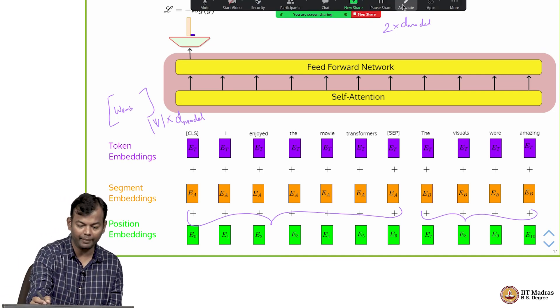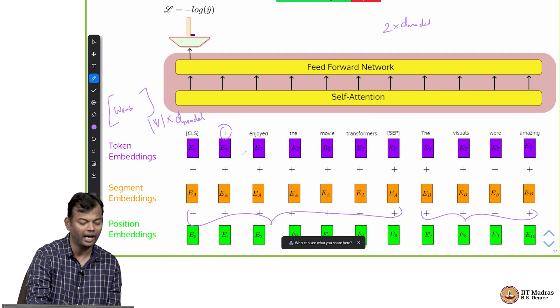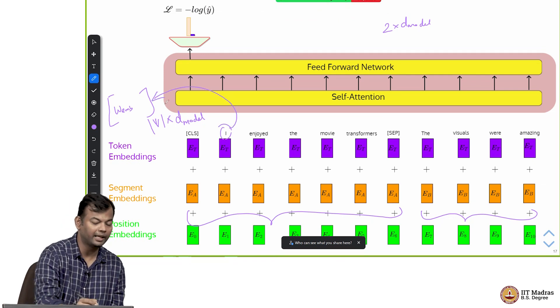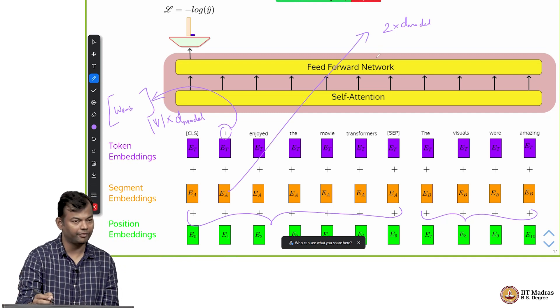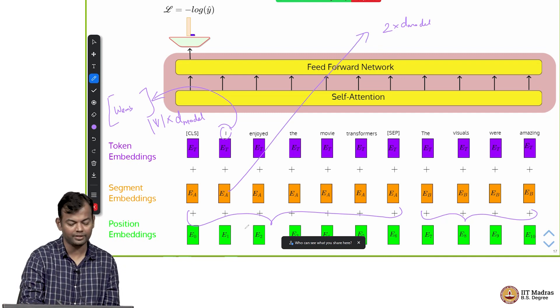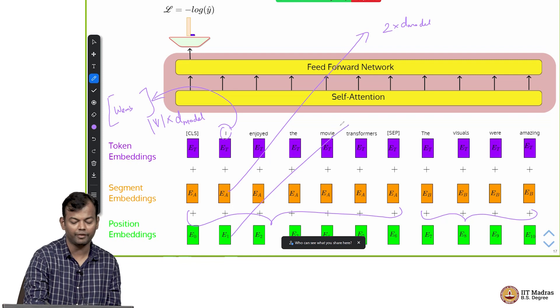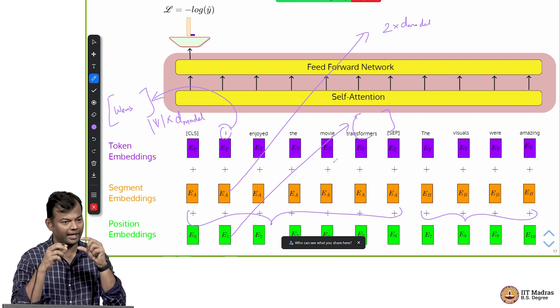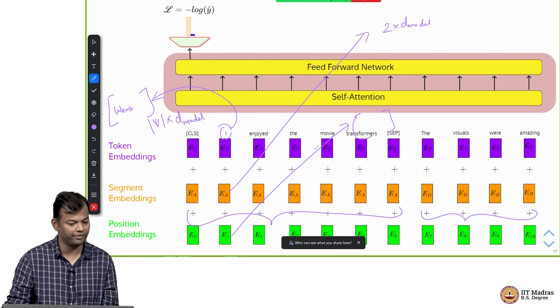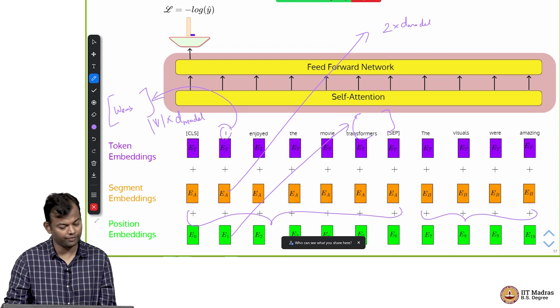The effective embedding of the word is its word embedding coming from this matrix, its segment embedding coming from this simple small matrix, and the positional embedding coming from the positional embedding matrix. All of these 3 added up to give one unified embedding for the word and that is what was fed as input to the transformer.